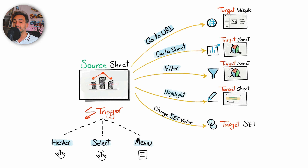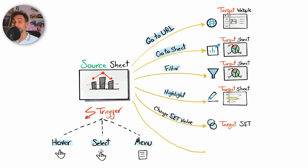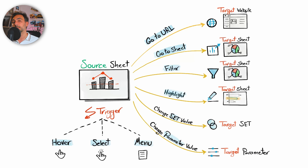We also have two actions that impact values. The first is Change Set Value — anything you do on the source sheet is going to affect the members or values of the target sets, making the set very dynamic and interactive. The last one is Change Parameter Values — any interaction on the source sheet will impact the values of the parameters.